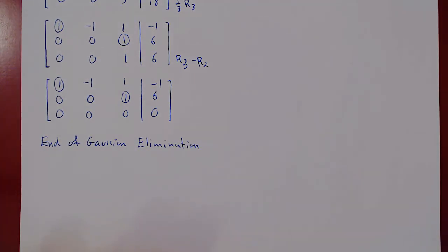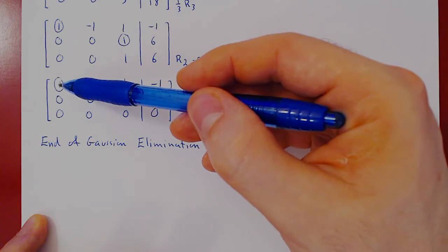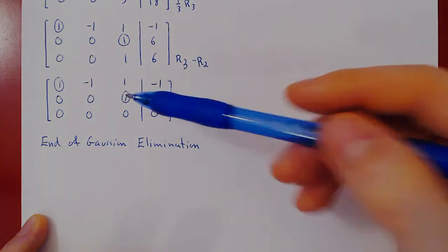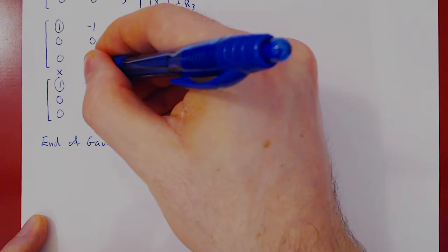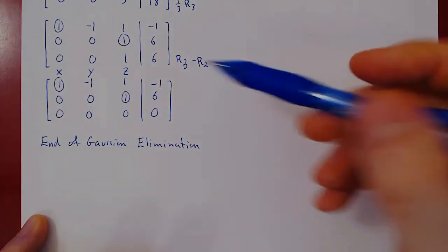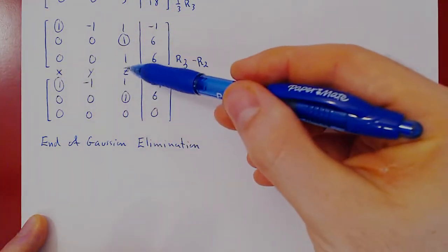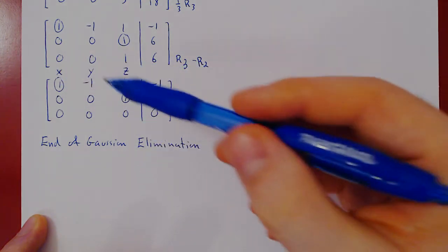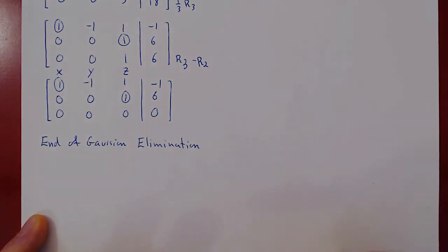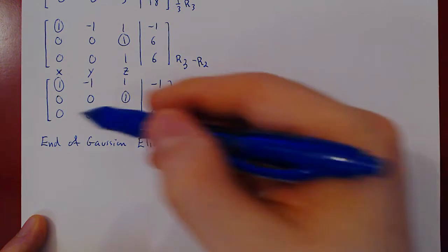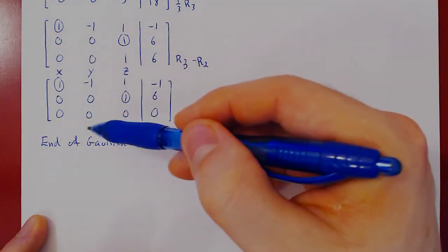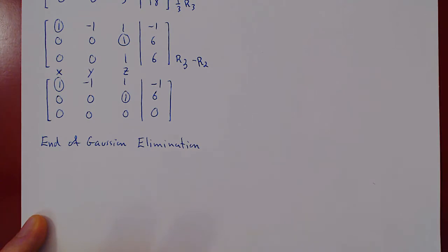The question is what do we do from this point on? Previously we had unique solutions and used backward substitution. But notice we have a leading one for x and a leading one for z — the columns correspond to x, y, and z — so x and z are leading variables. However, y does not have a leading one, so y is actually a free variable. Because the system is consistent, having a free variable implies we get a parameter, giving us an infinite number of solutions.